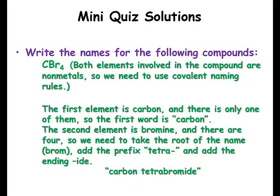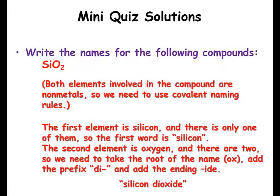Here's another one — both nonmetals, so it's a covalent compound. The first element is carbon, only one, so we write 'carbon', not 'monocarbon'. The second element is bromine — take off the '-ine', add '-ide' to get bromide, and there are four of them, so tetrabromide: carbon tetrabromide. Similarly, silicon with one and oxygen with two gives us silicon dioxide.